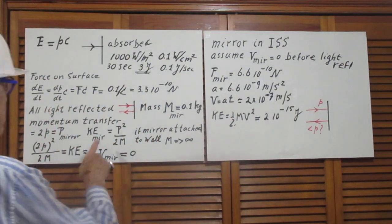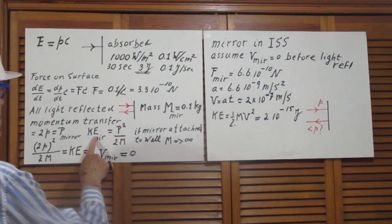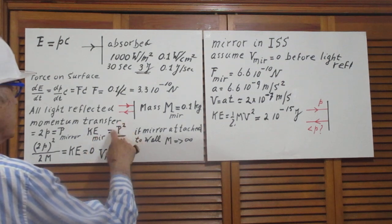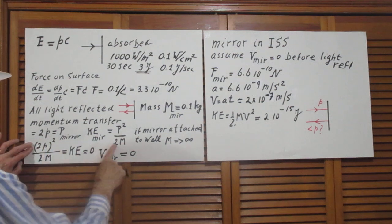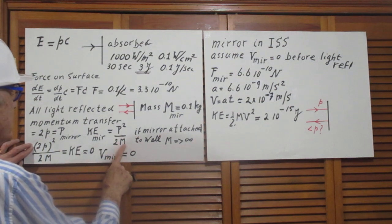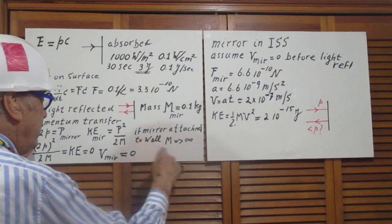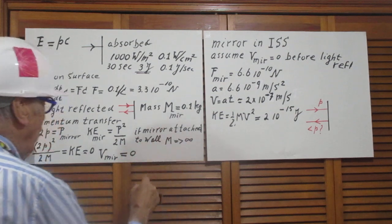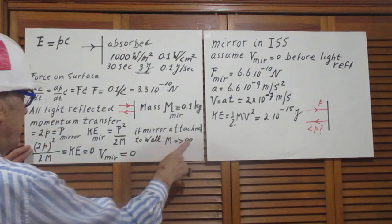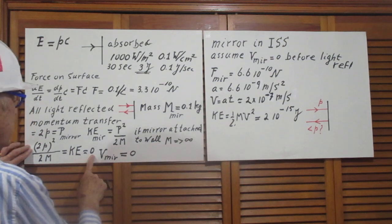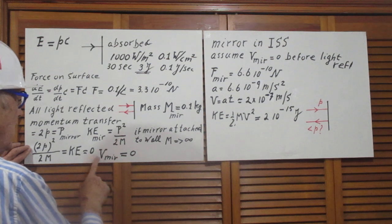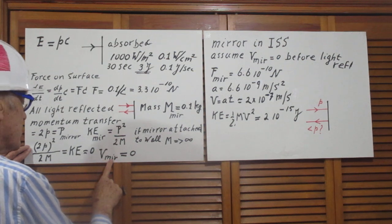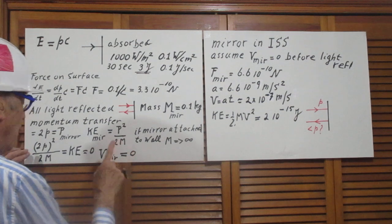So therefore the kinetic energy of the mirror is then P squared, which is not zero at all, it is two little P squared divided by 2m. But m is now the mass of the mirror plus the wall and the whole thing, which is infinity. So the kinetic energy of the mirror is now zero. It means that the speed of the mirror after the collision is zero.